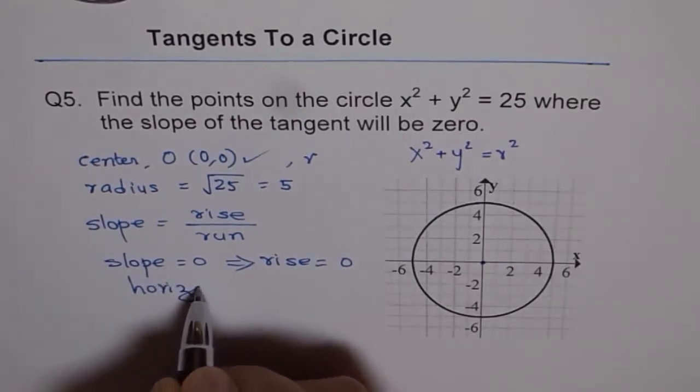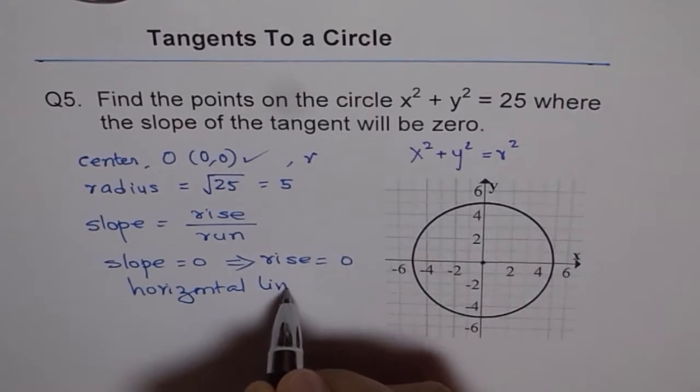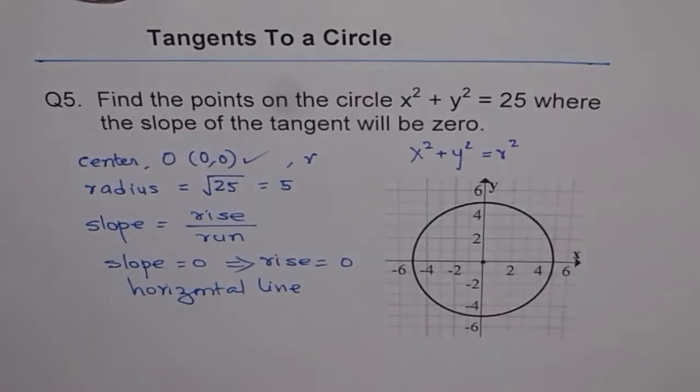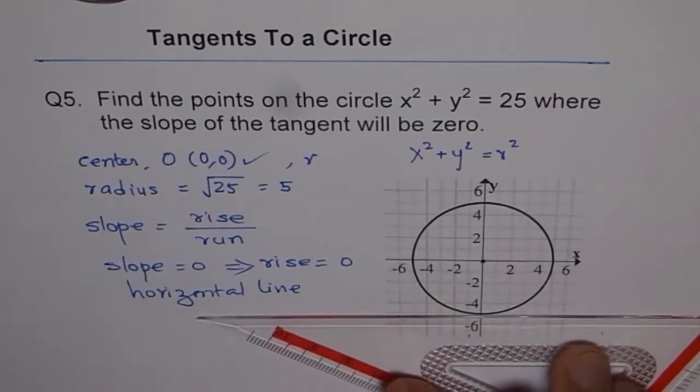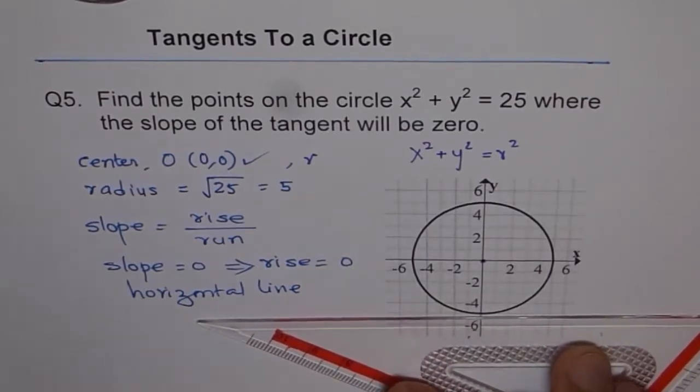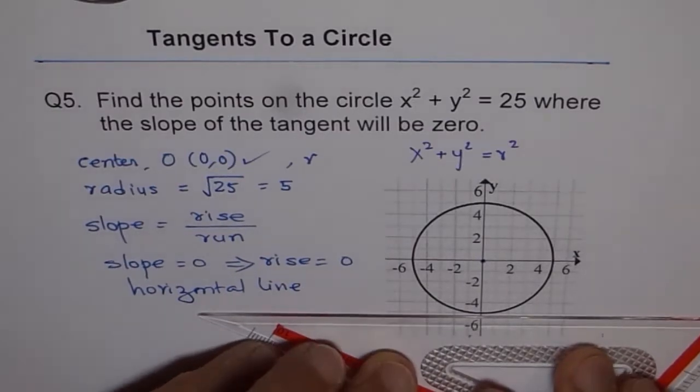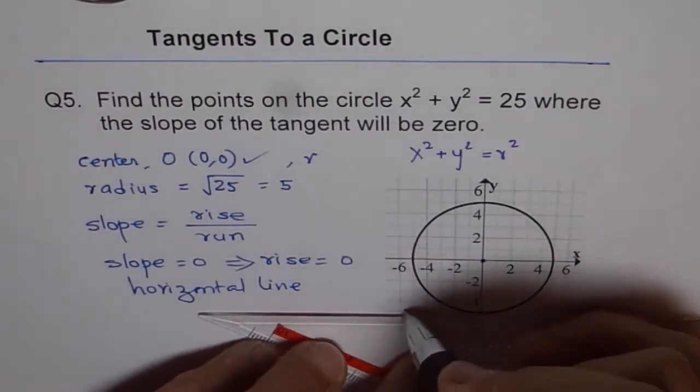Do you see that? Horizontal line. So if I have a horizontal line, then basically let us think this is my horizontal line. So where will this be tangent to the circle? Well, that is one point where it is tangent to the circle. So I can draw one tangent here.